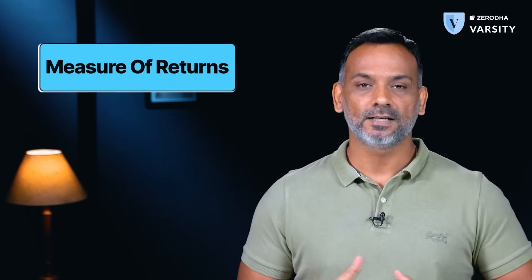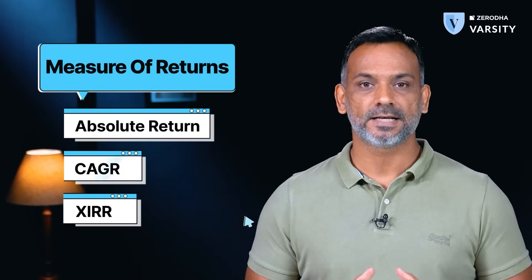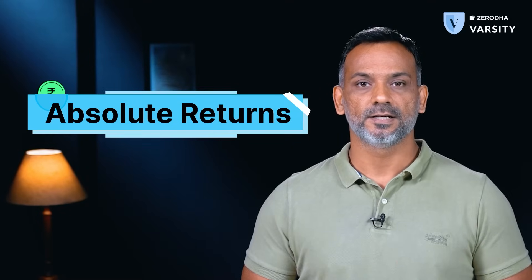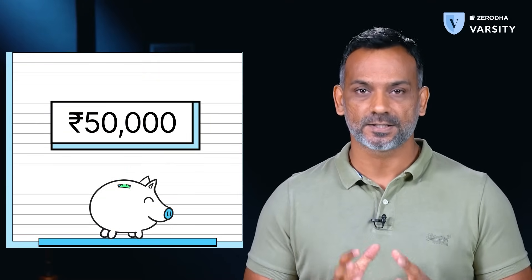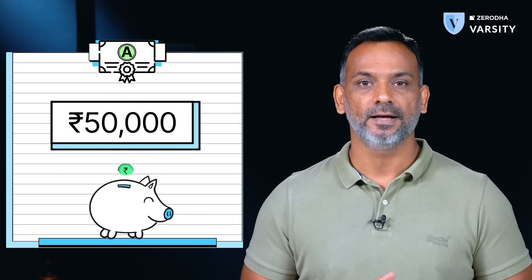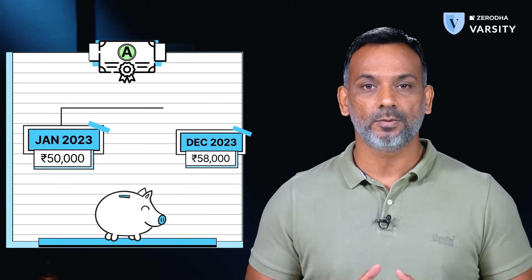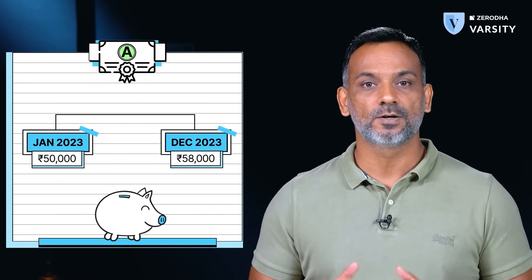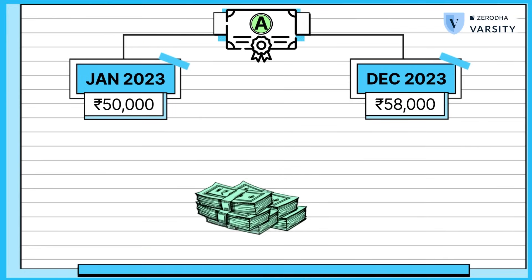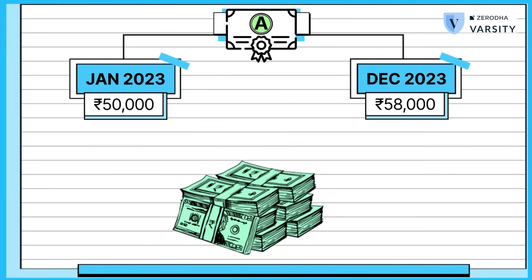Let's start with calculating the returns. There are multiple ways to calculate the return that you've made on an investment. The most basic and fundamental technique to calculate return is called the absolute return. Consider this: you invest 50,000 in a stock — let's call it Stock A — in January 2023. By December 2023, the investment has grown to 58,000.